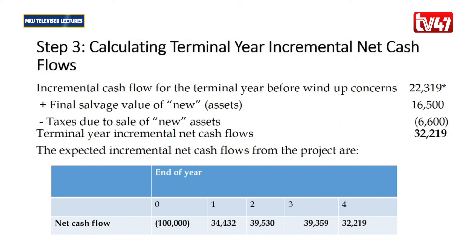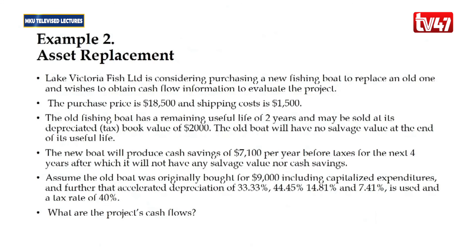The expected incremental cash flows for the project are: year zero, a cash outflow of 100,000; year one, 34,432; year two, 39,530; year three, 39,359; and year four, 32,219 (which includes the salvage value of the asset).